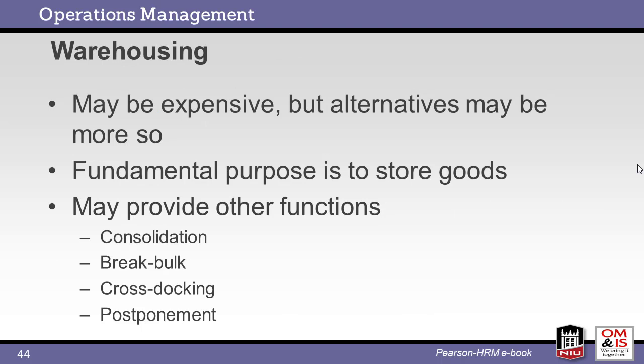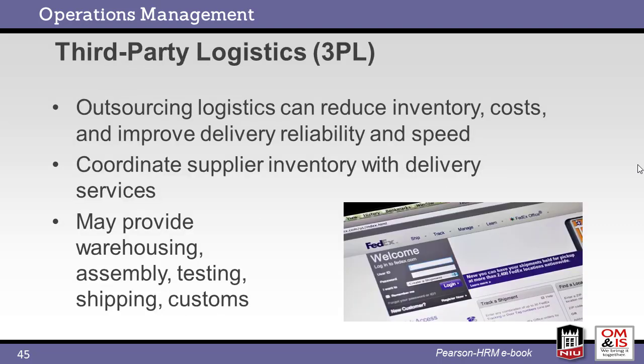Warehousing starts by storing inventory, but may also provide consolidation — bringing separate shipments together — and break bulk, splitting larger quantities into smaller to match customer needs. Cross-stocking occurs when inbound shipments move directly to the outbound truck without stopping in the warehouse. This is ideal but requires good coordination of shipments. Finally, warehouse operations can perform postponement. Outsourcing logistics to a third-party 3PL can reduce inventory and cut delivery time. These logistics partners may provide several shipping tasks, along with light assembly and customs.